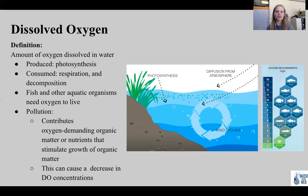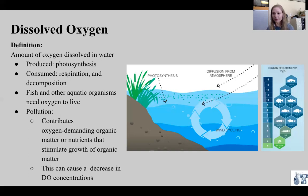Low concentrations of dissolved oxygen (DO) cannot sustain aquatic life. Pollution contributes to oxygen-demanding organic matter from sewage, lawn clippings, soils from stream bank and lakeshore erosion, and from agricultural runoff — or nutrients that stimulate growth of organic matter — and pollution can cause a decrease in average dissolved oxygen concentrations. This figure in the middle shows that oxygen enters the lake system through photosynthesis, diffusion from the atmosphere, and wind cycling, which helps distribute dissolved oxygen throughout the lake system.